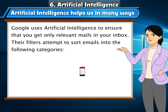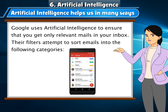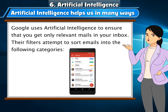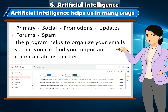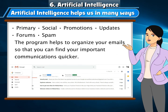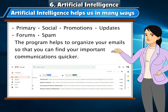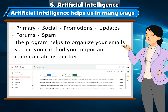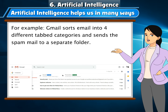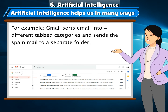Email Filters in Gmail: Google uses Artificial Intelligence to ensure that you get only relevant mails in your inbox. Their filters attempt to sort emails into the following categories: Primary, Social, Promotions, Updates, Forums, and Spam. Their program helps to organize your emails so that you can find important communications quicker. For example, Gmail sorts emails into four different tabbed categories and sends spam mail to a separate folder.